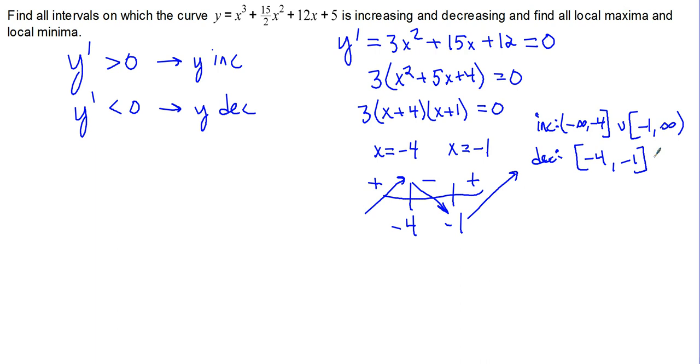It may seem a little bit counterintuitive to put brackets, indicating that these are closed intervals for our increasing and decreasing intervals, but that's the way the College Board likes it for the AP test, so that's what we're going to stick with for now. Now we can clearly see that a local max occurs at x equals negative 4, and a local min occurs at x equals negative 1.